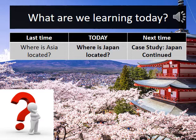Last time we learned that Japan is on the continent of Asia. Today's session is all about Japan's features and looking a little bit more at where it's located in Asia. But next time we're going to really dive into the culture of Japan and how it became the unique place that it is.